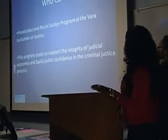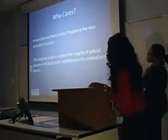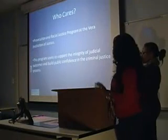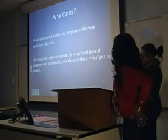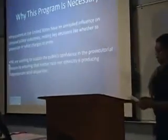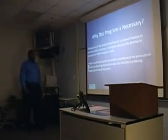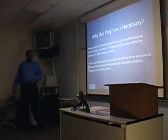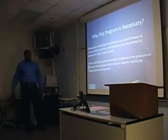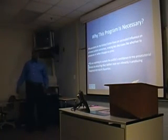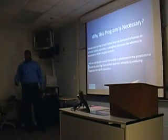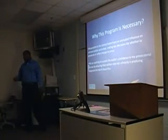The Prosecution and Racial Justice Program at the Bureau of Justice seeks to support the integrity of judicial outcomes and build public confidence in the justice process. Prosecutors in the United States may have a big influence on key decisions like whether to prosecute or what charges to present. The PRJ is working to sustain the public's confidence in the prosecution process by ensuring that neither race nor ethnicity leads to inappropriate treatment in courtrooms, policing, prisons, probation, and jails.